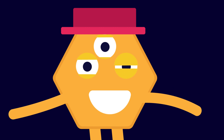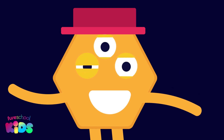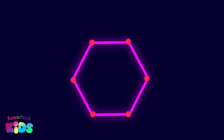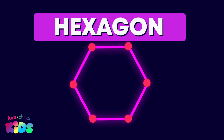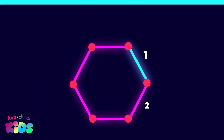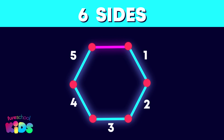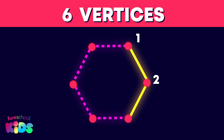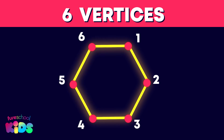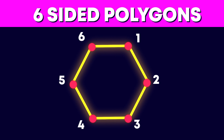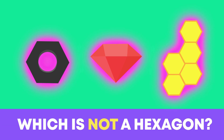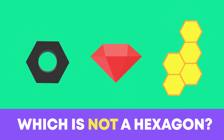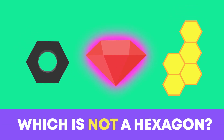Let's say hi to hexagon Harry. Can you say hexagon? A hexagon has 1, 2, 3, 4, 5, 6 sides and 1, 2, 3, 4, 5, 6 vertices. Hexagons are 6-sided polygons. Which of these is not a hexagon? This one is right.